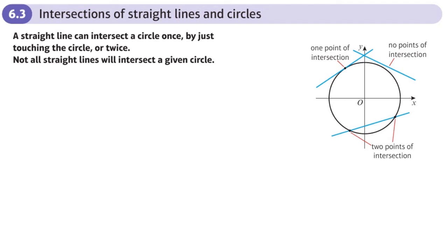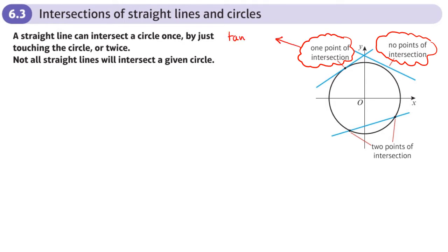This is the third section of the circles chapter, covering intersections of straight lines and circles. When you have a straight line and a circle, there are three possible options. The circle and the line do not intersect at all, or they have one point of intersection — in which case the line is a tangent to the circle — or the line intersects the circle at two points, making it a chord.